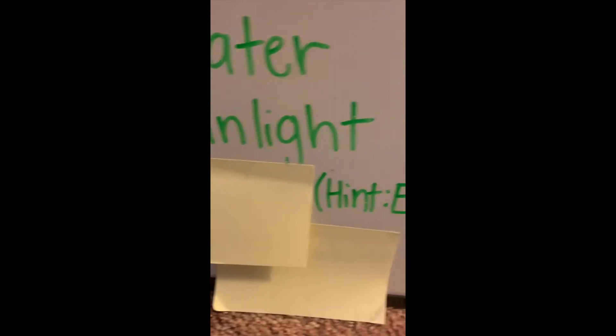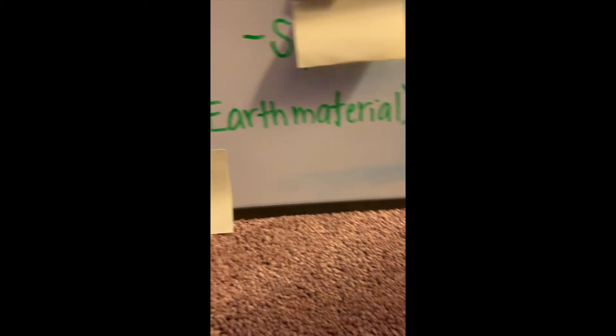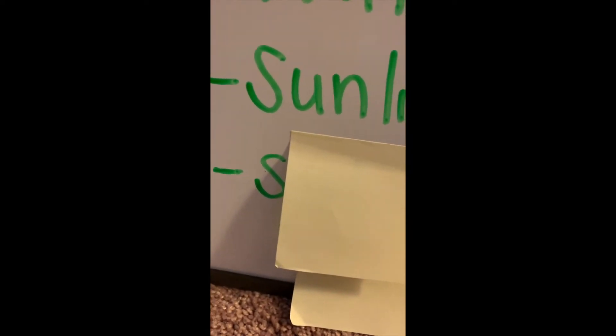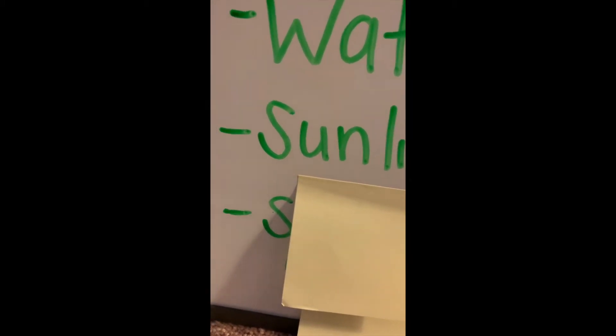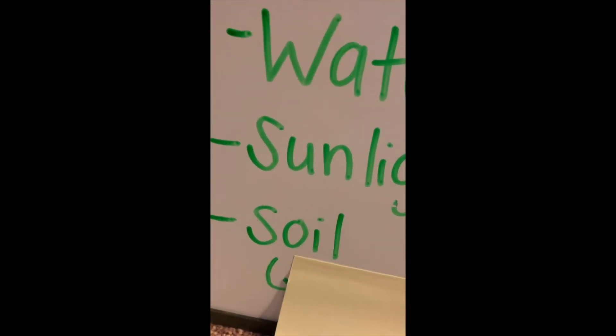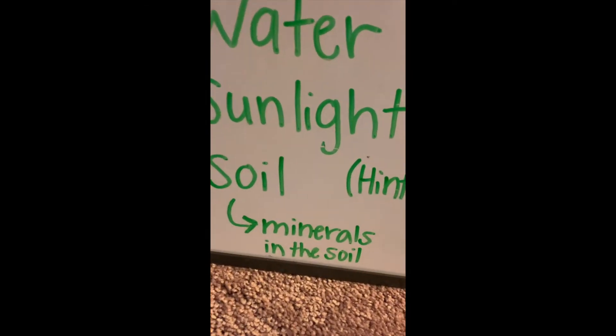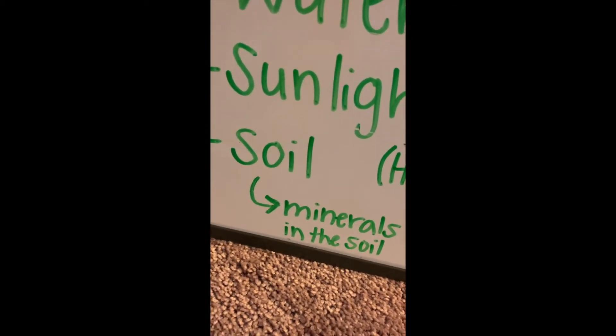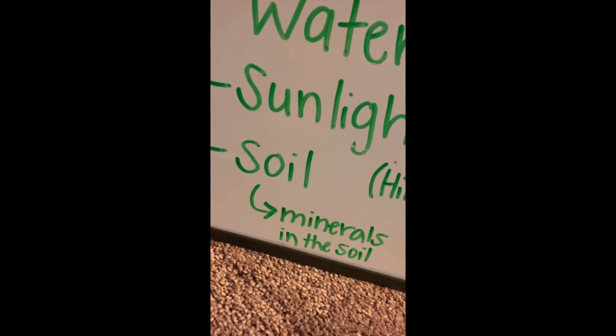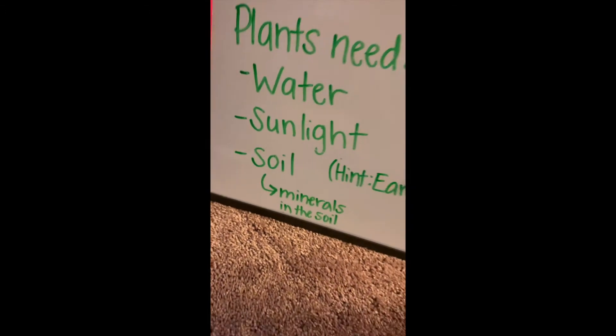This next one we haven't talked about with all living things, but we have talked about it in class before. It's an earth material. What is one of our four earth materials? It starts with an S. It can't be rocks — we already have water. What's an earth material that starts with an S? It's not sand, but soil. Plants don't just need the soil — they specifically need the minerals in the soil. The soil has minerals that help the plant get what it needs. It's kind of like food for the plant. Soil is one of our main things.